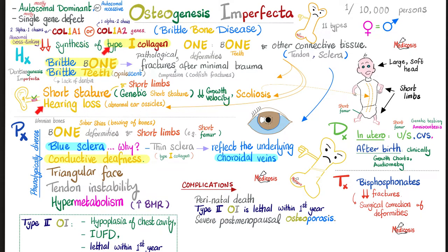On physical exam: bone deformities, short limbs. On ultrasound in utero: short femur and bending of the bones. Blue sclera occurs because of defective collagen — very thin scleral tissue reveals the choroidal veins beneath, which appear blue because they carry deoxygenated blood. Using tuning fork tests such as Weber, Rinne, and Schwabach tests, you can discover conductive hearing loss; audiometry is more accurate. Many patients have a characteristic triangular face and tendon instability, since tendons also have type 1 collagen. Some patients have hypermetabolism and elevated basal metabolic rate.